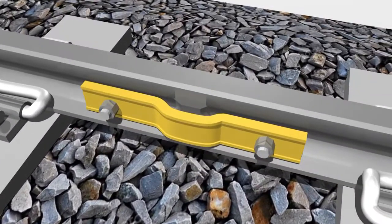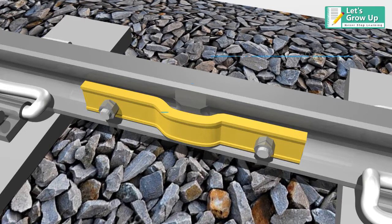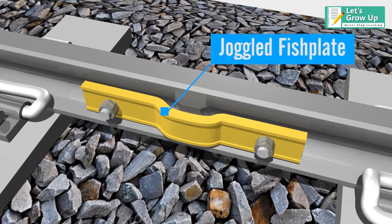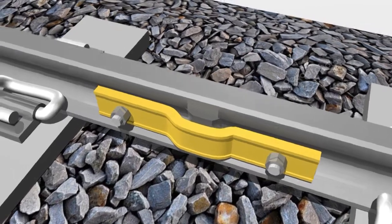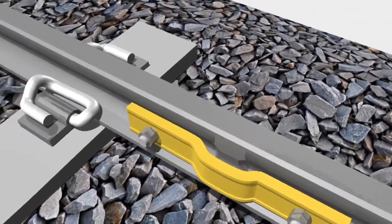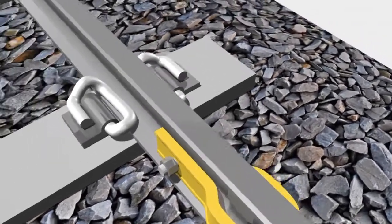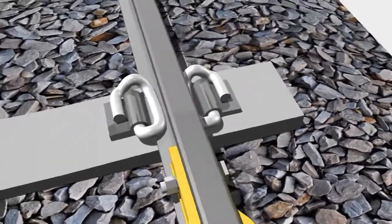There is another type of fish plate called the joggled fish plate. This is a specially designed fish plate with convexity in the center to accommodate the weld collar at newly welded joints, to protect defective welded joints, and to carry out emergency repair of weld failures.